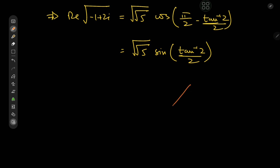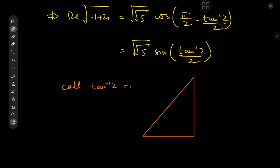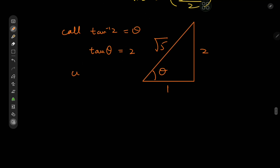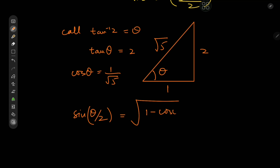We need to evaluate sin(arctan(2)/2). Let arctan(2) = θ, so tan θ = 2. Drawing the right triangle: the perpendicular is 2, the base is 1, and the hypotenuse is √5. So cos θ = 1/√5. For the half-angle, sin(θ/2) = √((1 − cos θ)/2) = √((1 − 1/√5)/2), which simplifies to √((√5 − 1)/(2√5)).